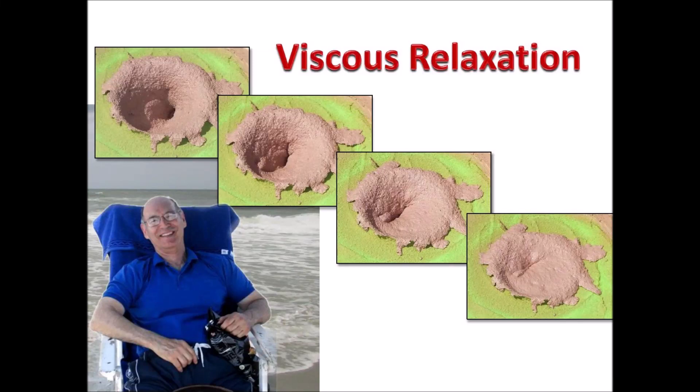Viscous relaxation is a plastic deformation process driven by gravity that tends to smooth out geological features by making hills less prominent and valleys less deep. The process is generally slow, but it can be speeded up by reducing the viscosity of the medium by heat or by vibrations that promote liquefaction.